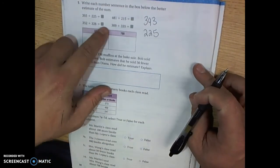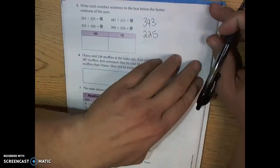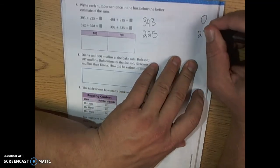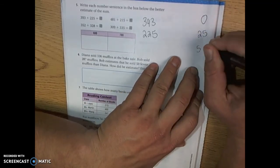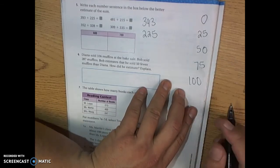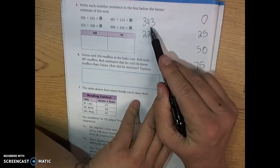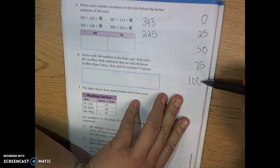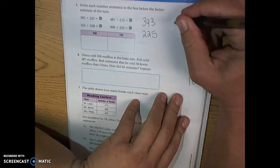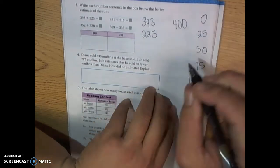And for these you're going to want to choose between 0, 25, 50, 75, or 100. 393. Which one is it closest to? It's closest to the 100. So 393 goes up to 400.